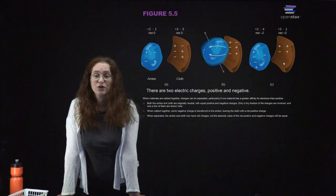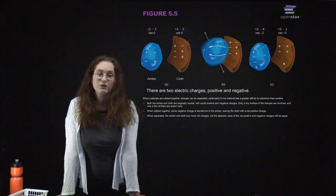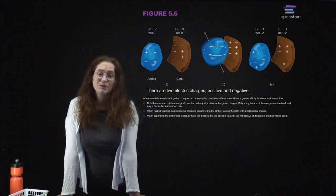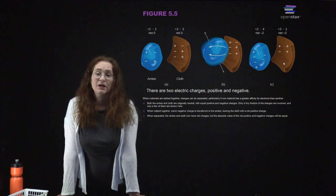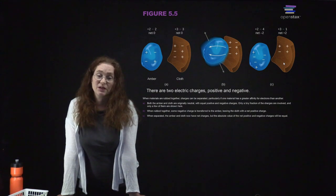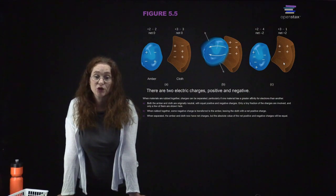One way to know that you have charges, and how you can in the comfort of your own home see that there are in fact electric charges, is to take two objects and rub them together. If you take something like amber and rub it against a cloth, you'll rub some of the electrons from the cloth onto the amber, which leaves it with a net negative charge. You will notice that the amber and the cloth are attracted to each other.